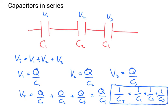And we know that the charge divided by the total capacitance is going to equal all this. If we cancel the charge on both sides, we're left with the fact that 1 over the total capacitance is equal to 1 over C1 plus 1 over C2 plus 1 over C3.